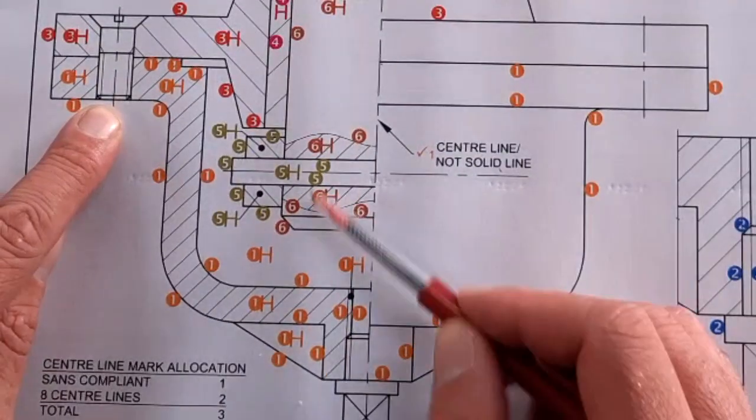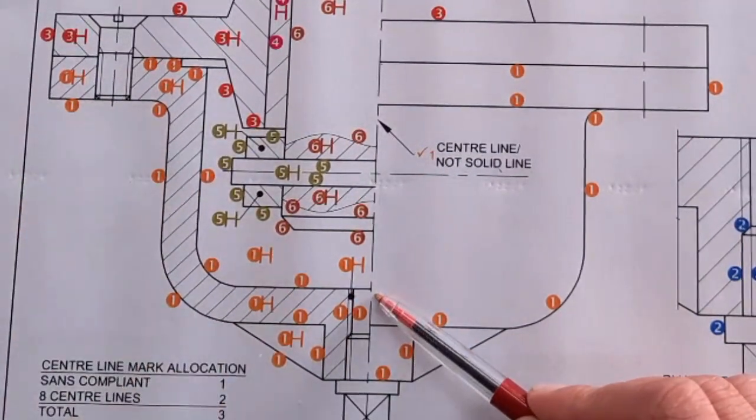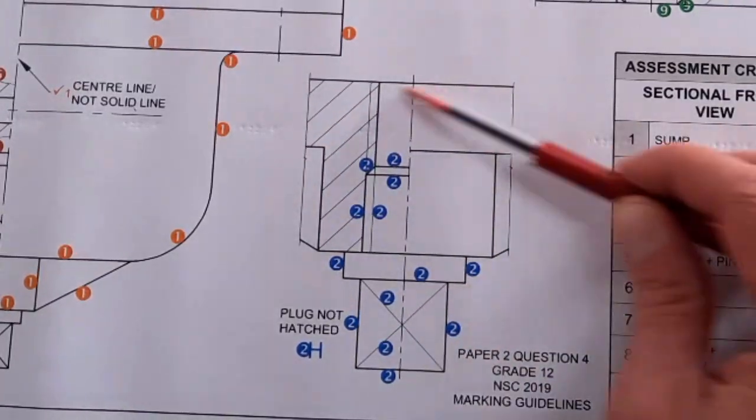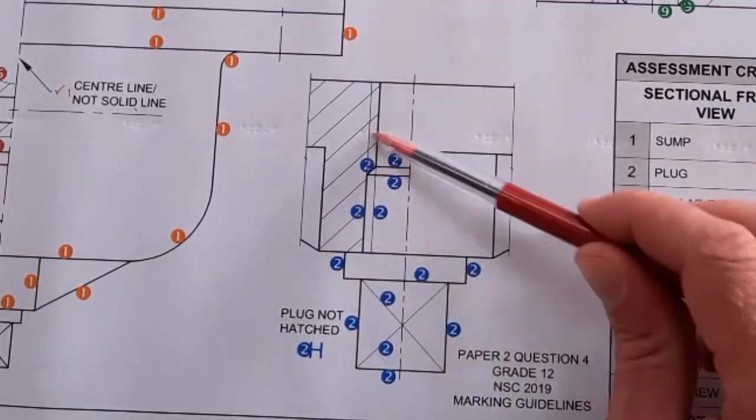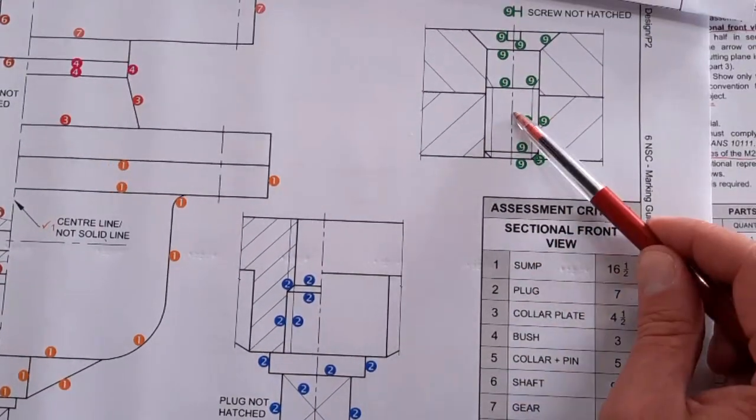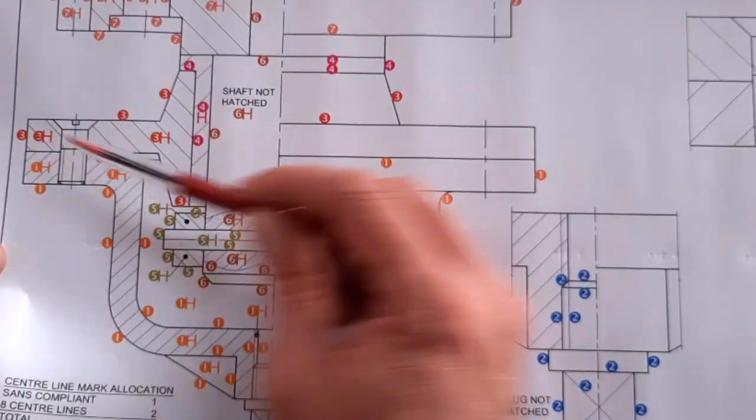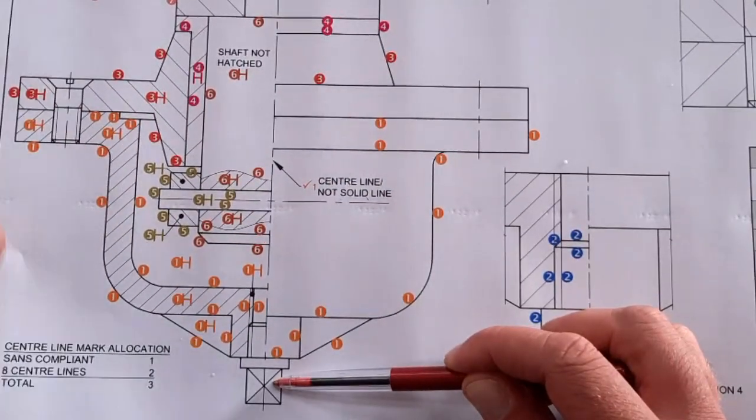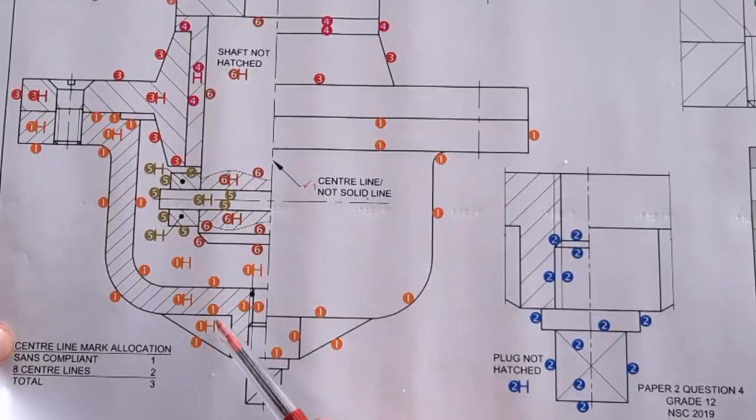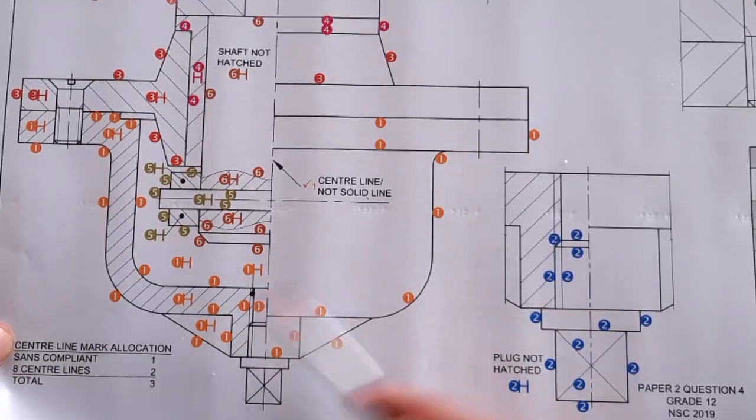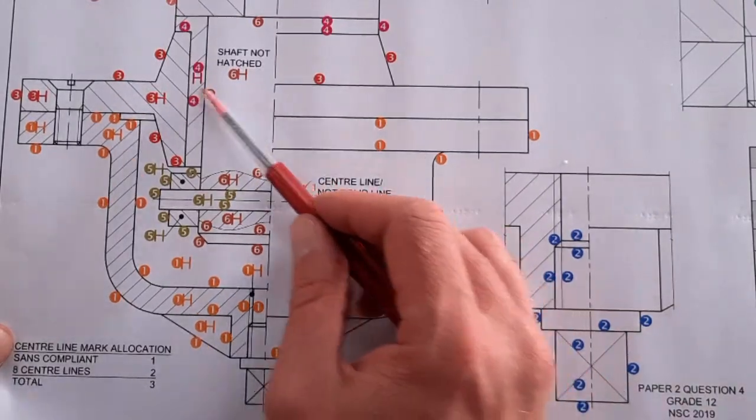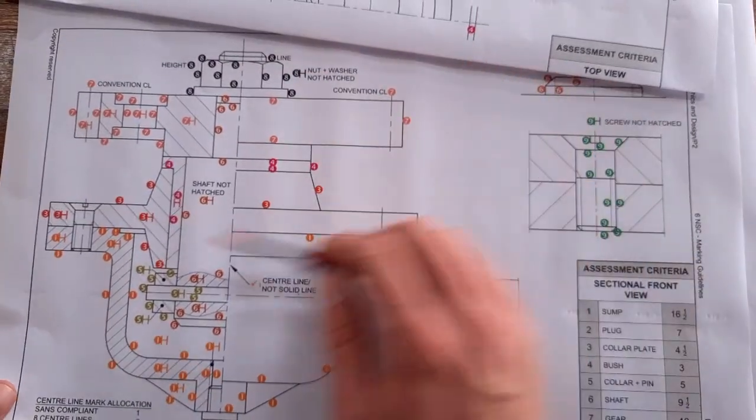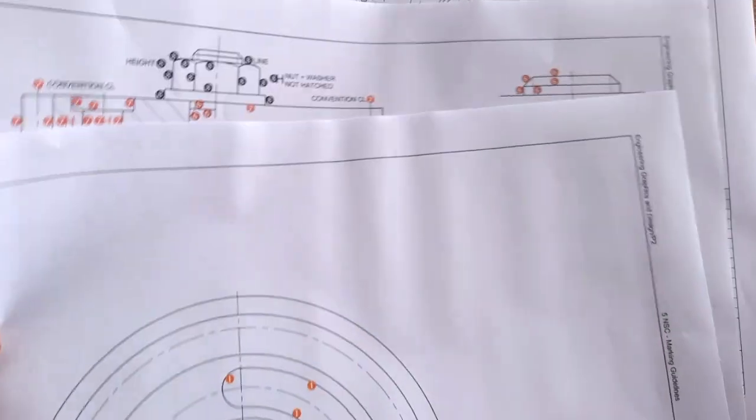All of these smaller details are given and you can see where the marks are allocated. They actually do the extra trouble when marking, giving us the memorandums, showing exactly where those marks are allocated. Quite a significant amount of marks going into those little components, so don't neglect them. Make sure they are drawn accurately. Remember, you do not hatch any webs or fasteners - they're not hatched. Hatching correctly done, and then if there's any labels you need to add them.